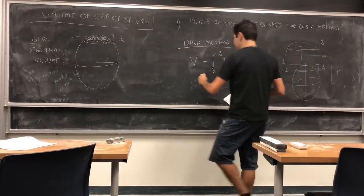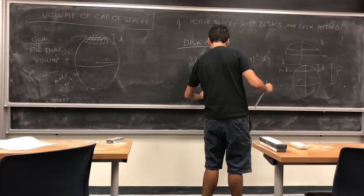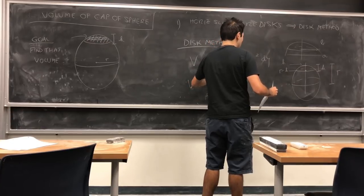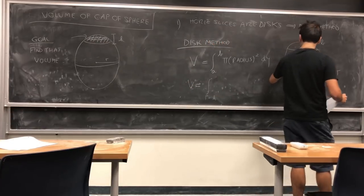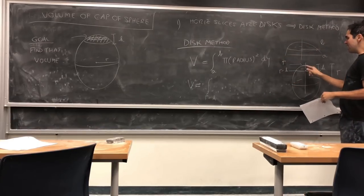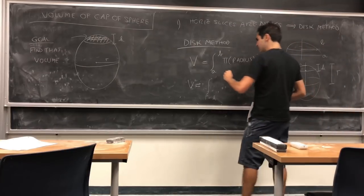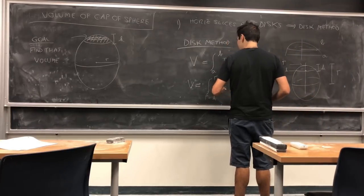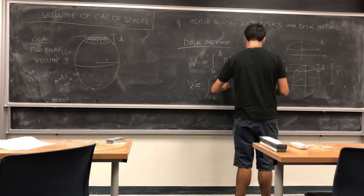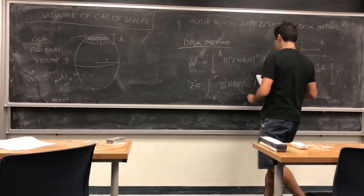So in the end, your volume just becomes integral from r minus h to r—you start at r minus h and you end at the radius itself, which is r. So integral from r minus h to r of π times radius squared dy.